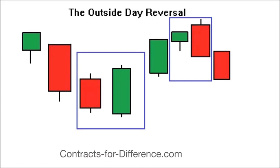There are a few of these gem patterns — where if we see them we always trade them — but they're all in the members section of our website. This one is quite common; you'll find it in textbooks and it's a well-known pattern. The other gems we trade aren't so well known. Anyway, this is a two-day pattern — it takes two days to form.